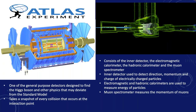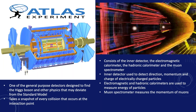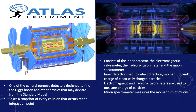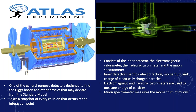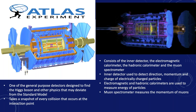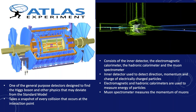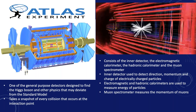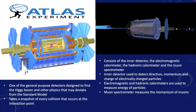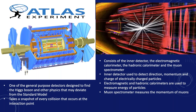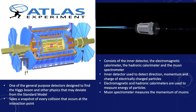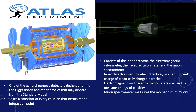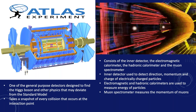Just to describe the ATLAS experiment: it is one of the general purpose experiments at the LHC, located on one of the interaction points. It was built with the intention to find evidence of the Higgs boson and other physics that may deviate from the standard model. It takes a snapshot of every collision that occurs at the interaction point, and the data is stored in various data centers around the world. The ATLAS detector consists of a few sub-detectors including the inner detector, the electromagnetic calorimeter, the hadronic calorimeter, and the muon spectrometer.